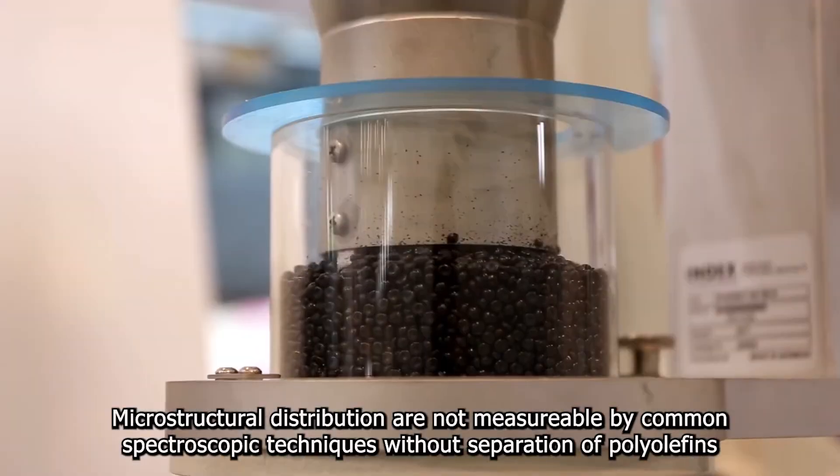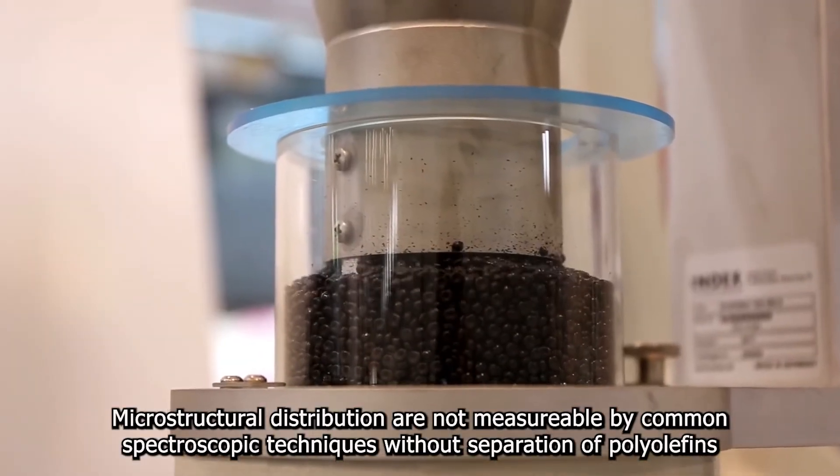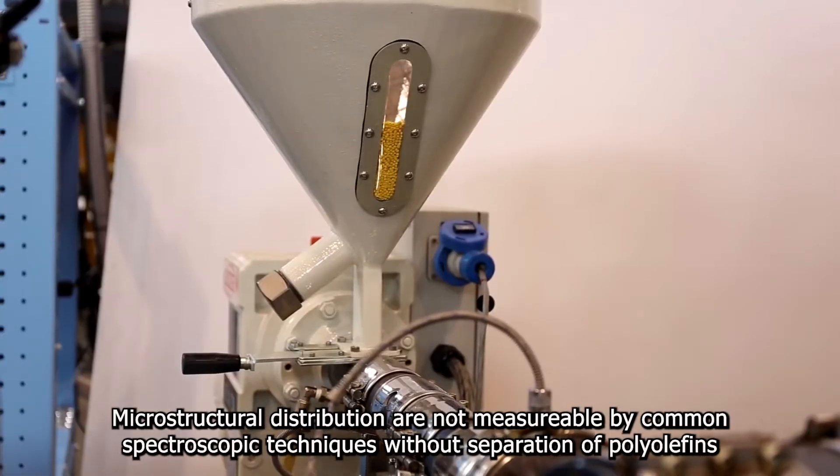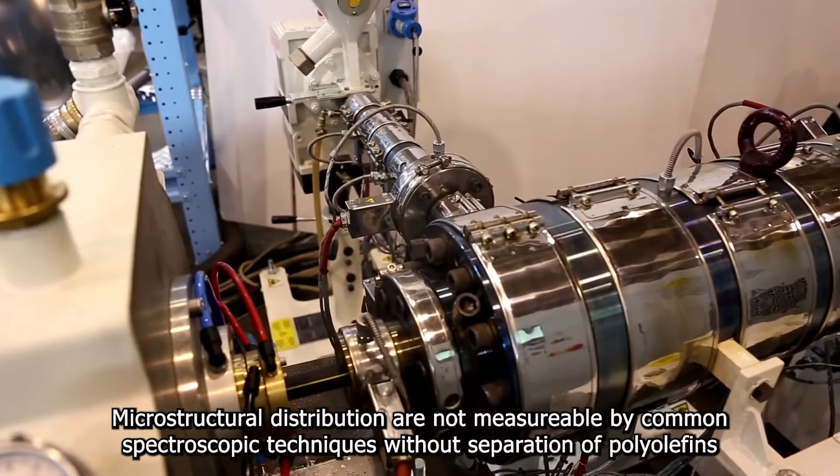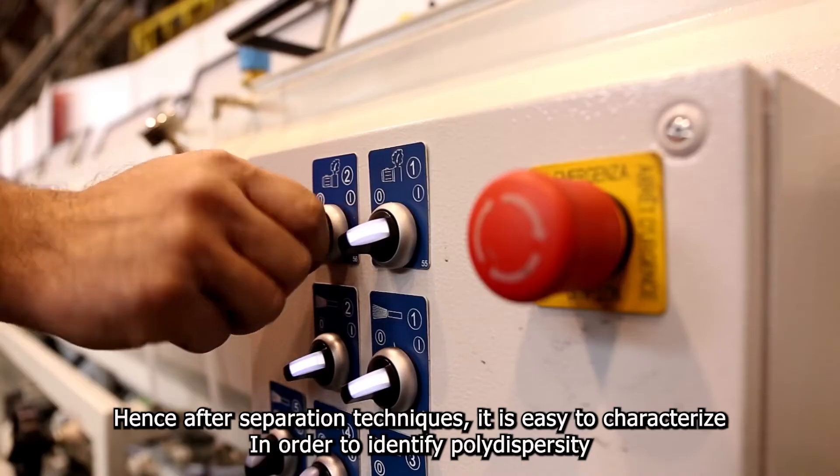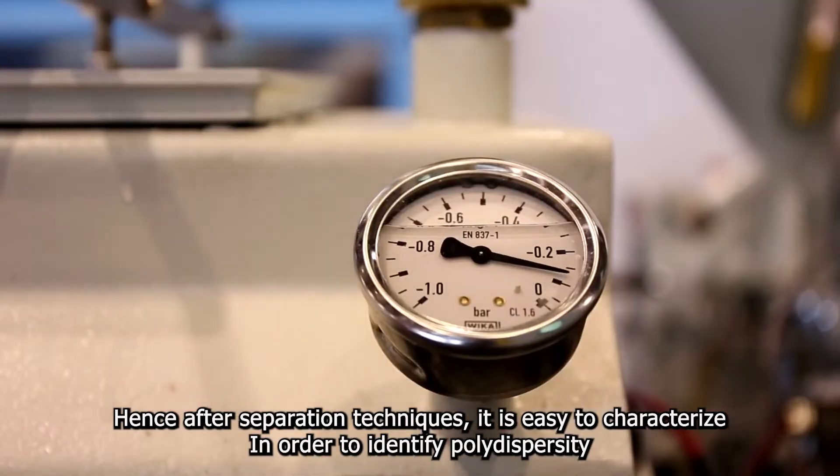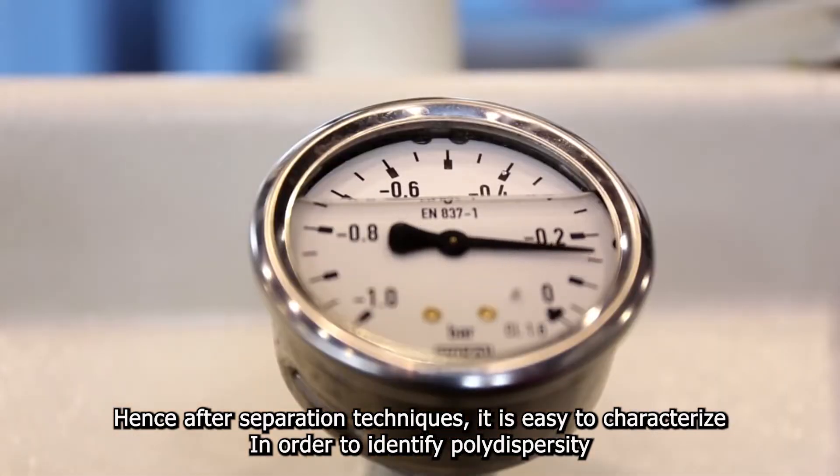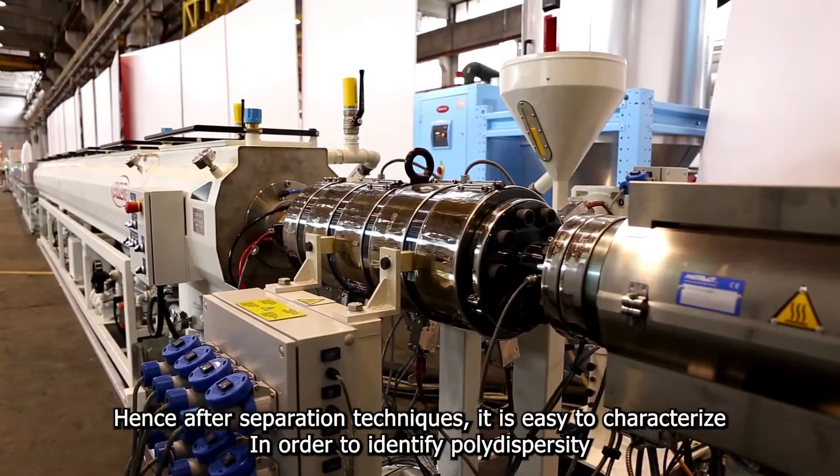Microstructural distribution is not measurable by common spectroscopic techniques without separation of polyolefin. Hence, after separation techniques, it is easy to characterize in order to identify polydispersity.